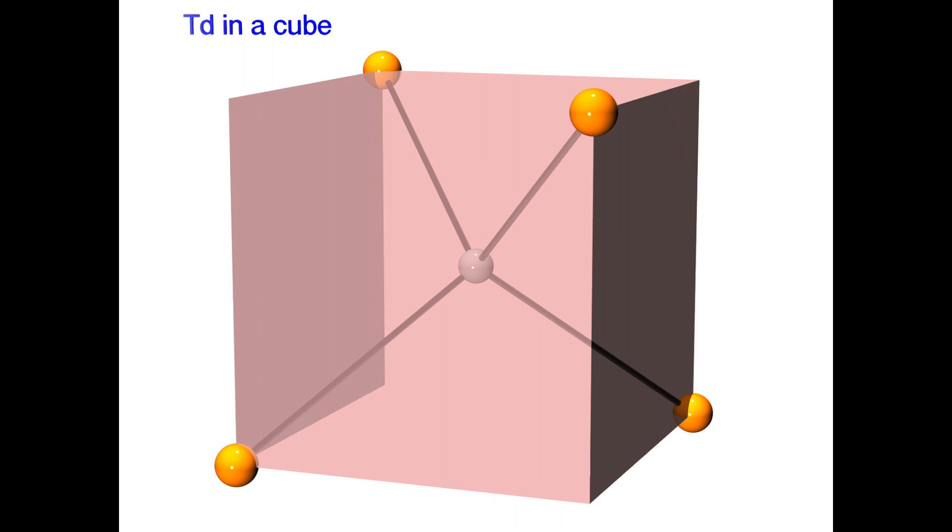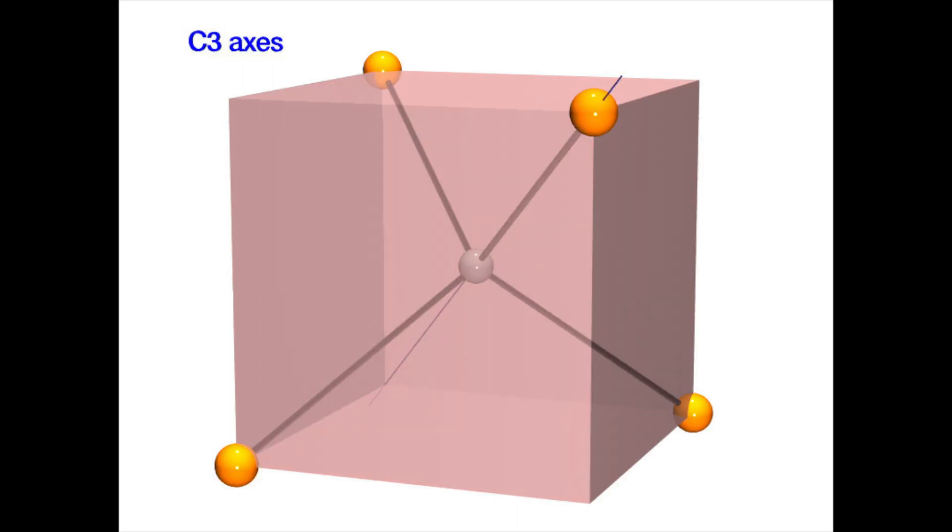In this orientation, the C3 axes run the body diagonal of the cube.